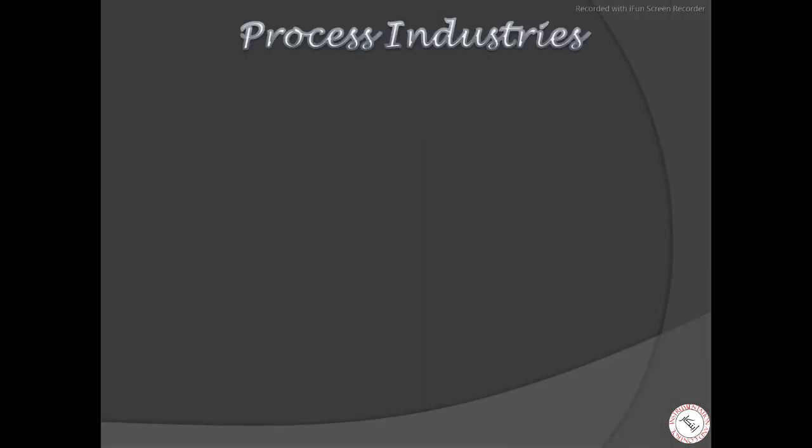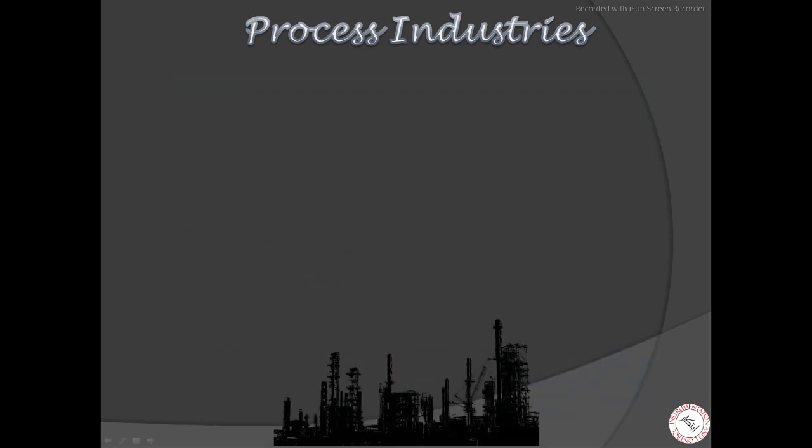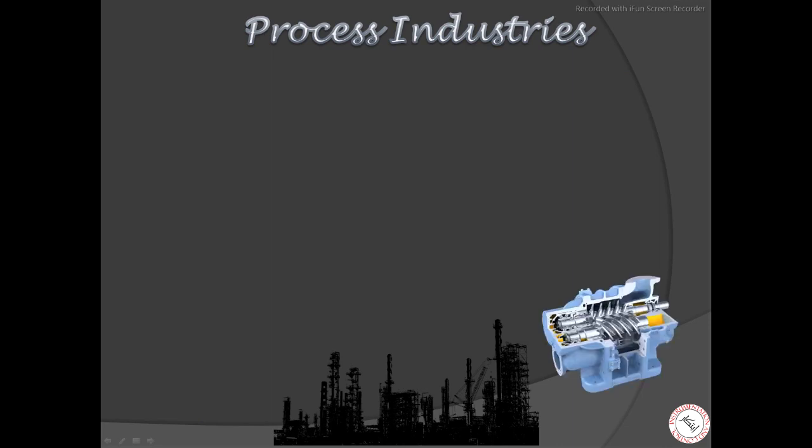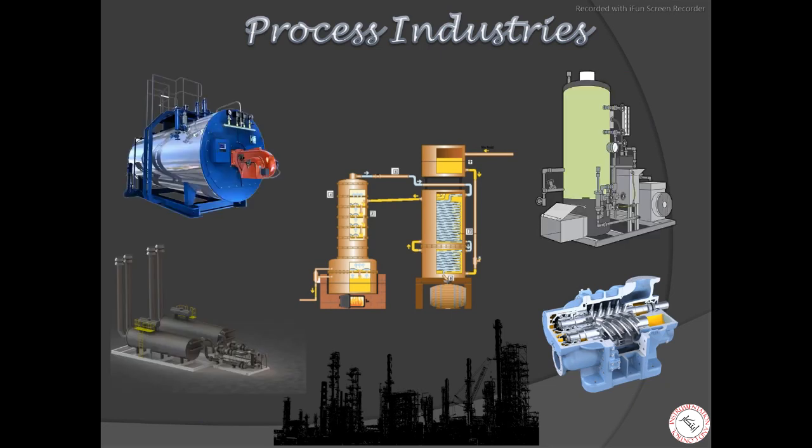Let's start with understanding what process industries are. Process industries are those industries which are continuously processing a recipe or formula of raw materials to convert them into value-added products. Such industries use a huge quantity of equipment like compressors, pumps, reactors, furnaces, turbines, etc. to process different effluents into required products.